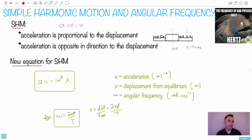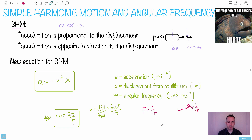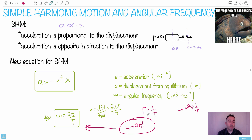On exams they'll almost always ask you about frequency rather than period, so remember that f equals 1 over T from Topic 4. We can rewrite omega as 2 pi times 1 over T, which gives omega equals 2 pi f. So you have two versions: omega equals 2 pi over T if you know the period, or omega equals 2 pi f if you know the frequency of oscillation.